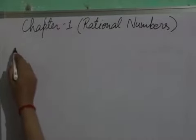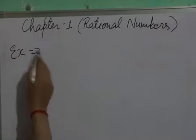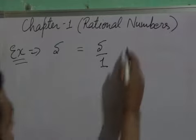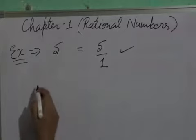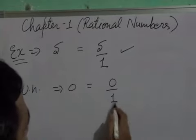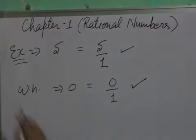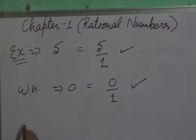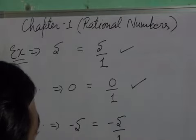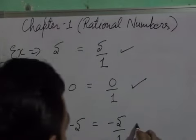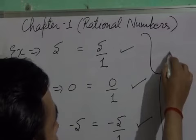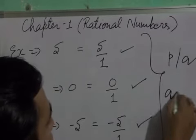Every natural number is a rational number. For example, 5 is a natural number and we can write it as 5 upon 1. Similarly, 0 is a whole number and we can write it as 0 upon 1, so every whole number is a rational number. We can also take integers — for example, minus 5 can be written as minus 5 upon 1, making it a rational number too. All three are rational numbers because they are written in the form of P by Q where Q is not equal to 0.